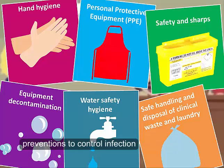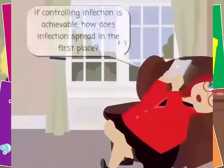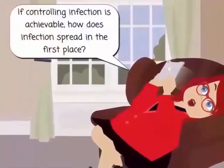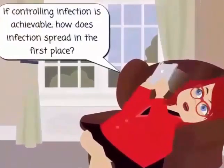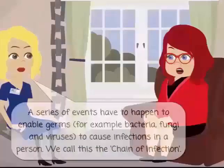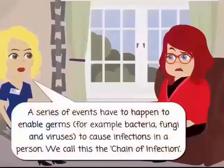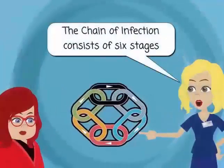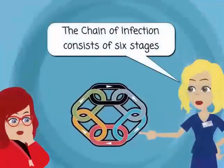If controlling infection is achievable, how does infection spread in the first place? It takes a series of events that have to happen to enable germs to cause infections in a person. We call this the chain of infection, and it consists of six stages.